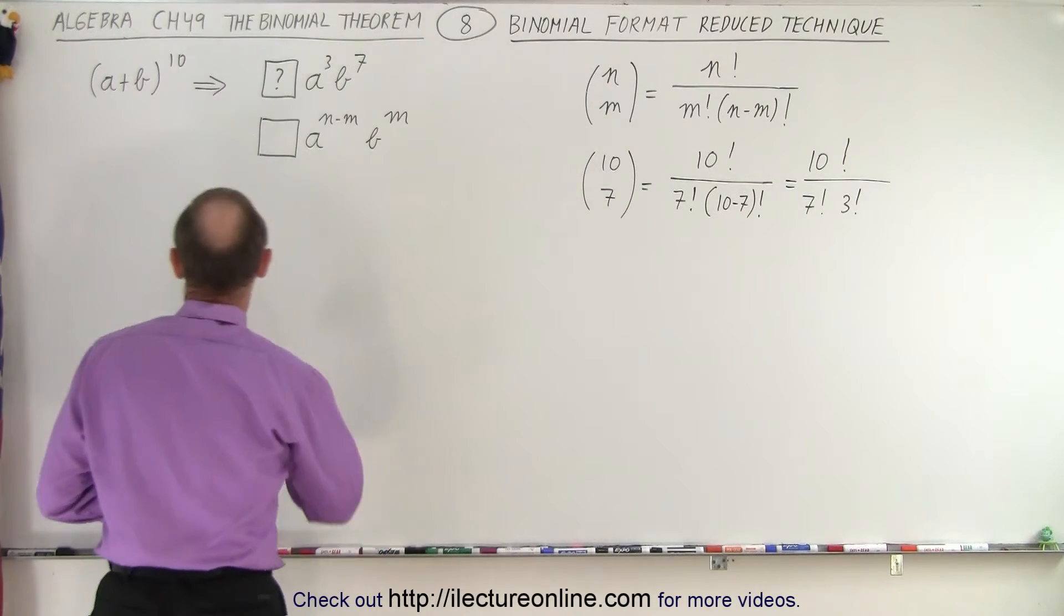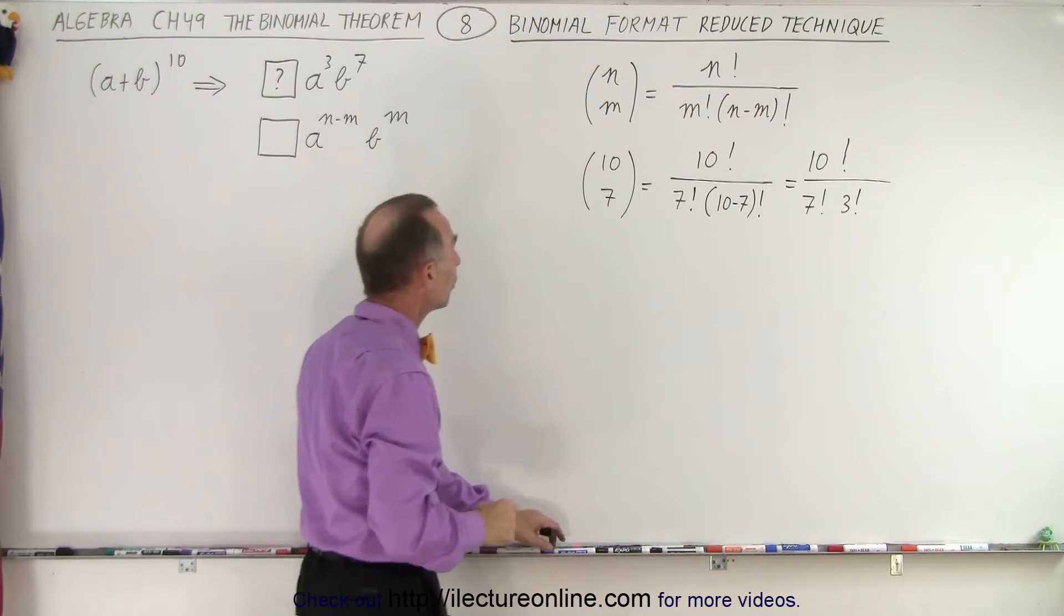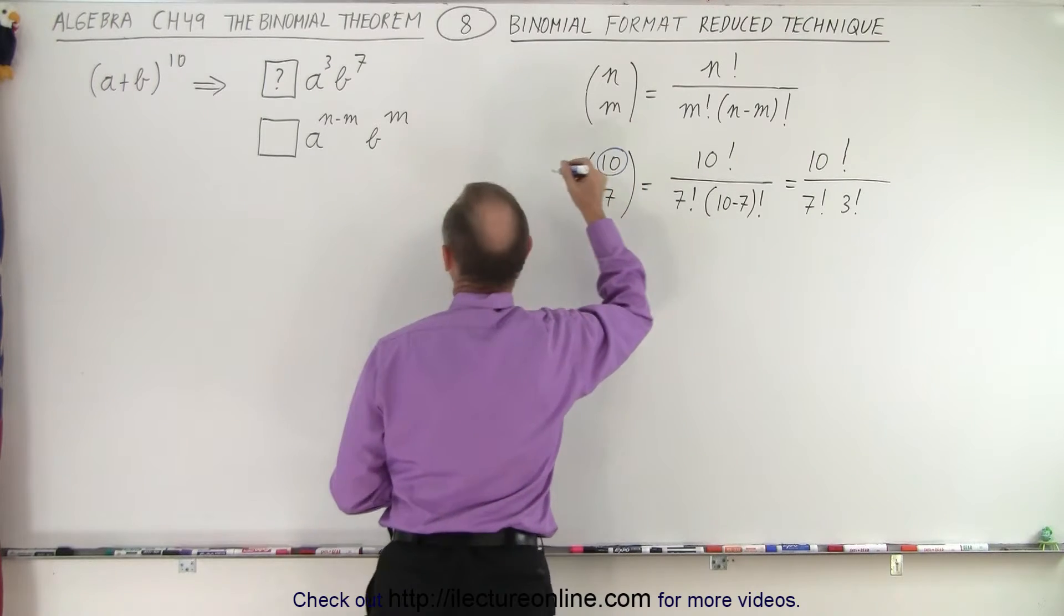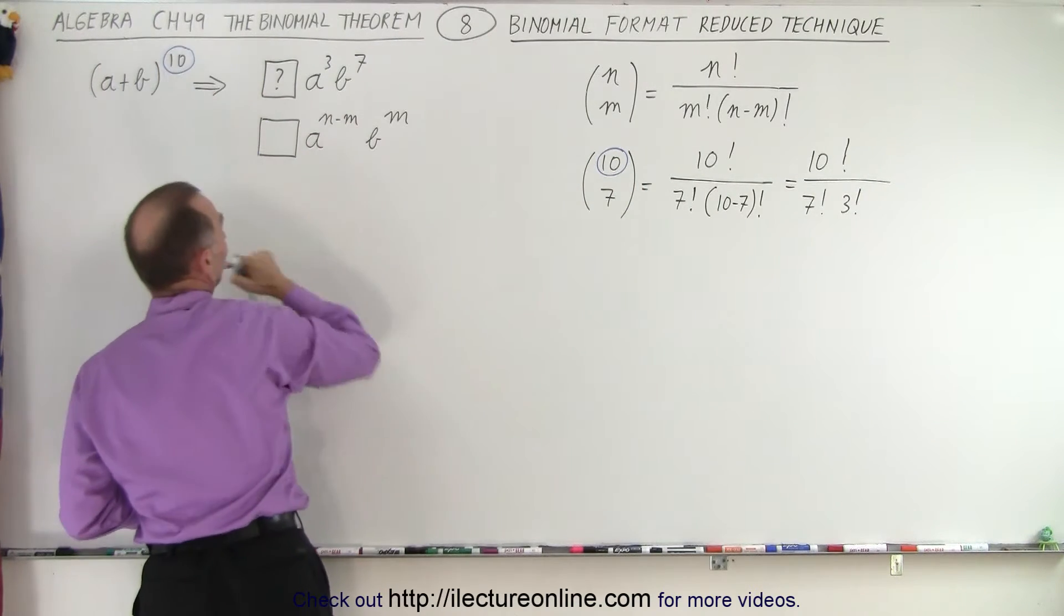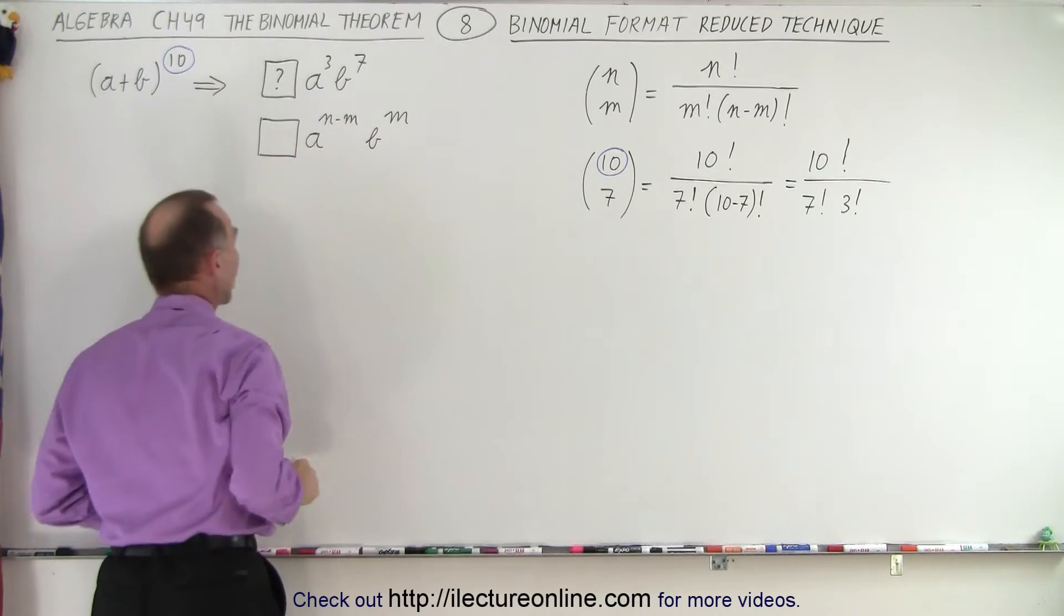Now let's take a look here. Let's say we have an expansion of a plus b to the 10 power. First of all, notice that the 10 up here is the same as the 10 up here. So that's the indication of the exponent used for the expansion.